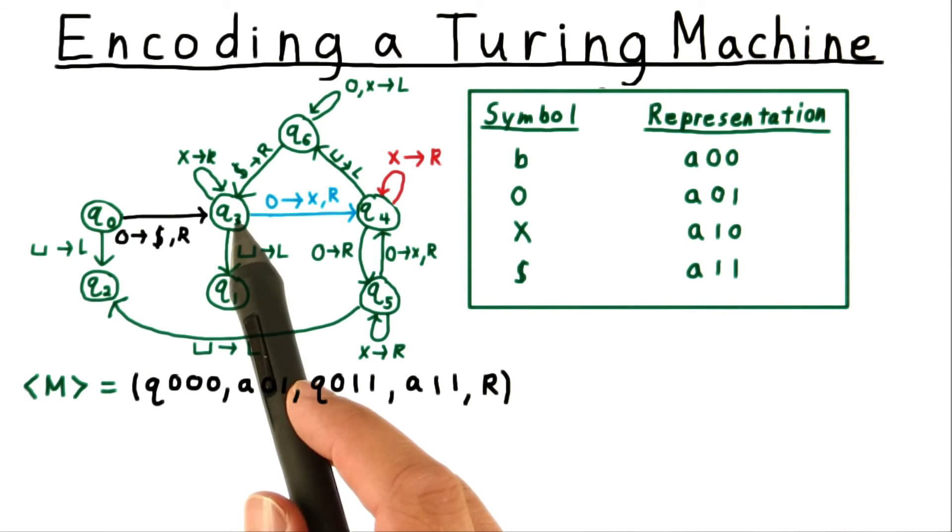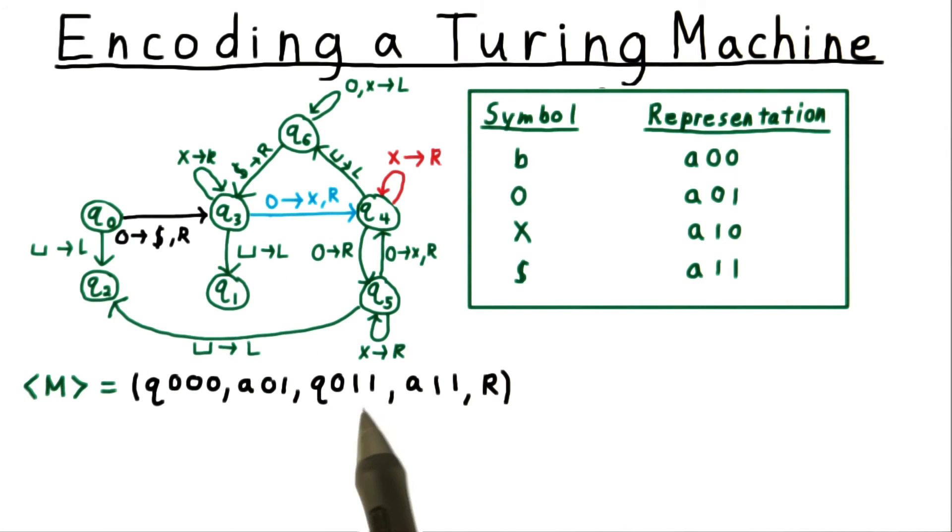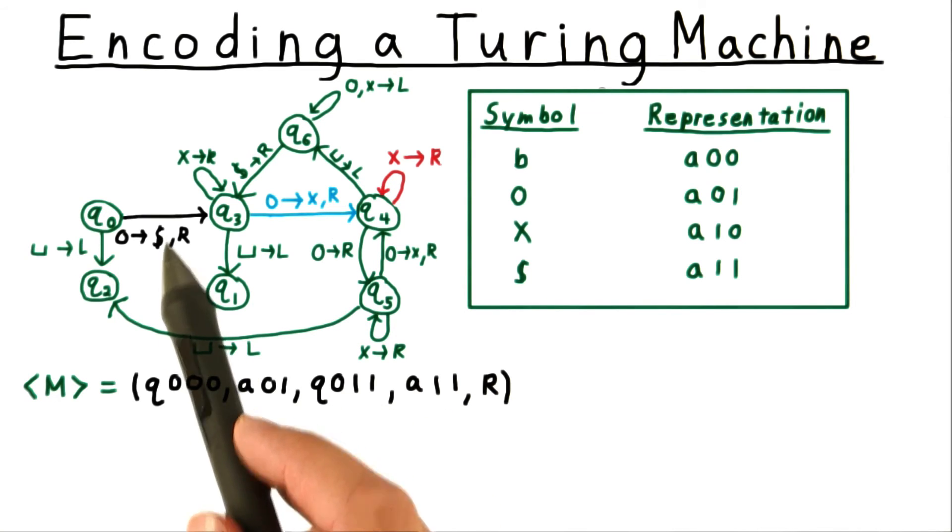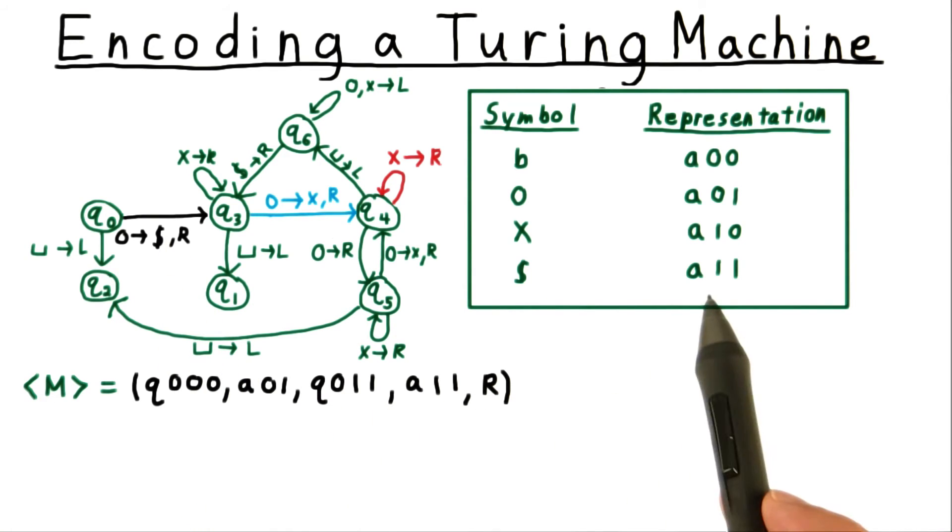And then we're going to state 3, so I'll write out that here. And then we need to write the dollar sign, so I'll write out the encoding for that, like so. And we're supposed to move to the right, so I'll write the r there.